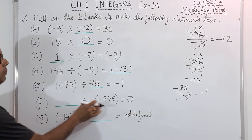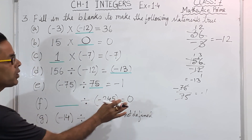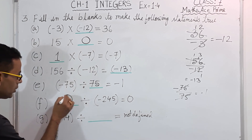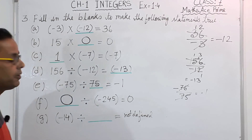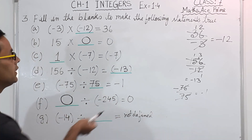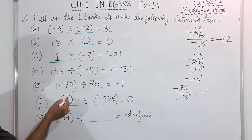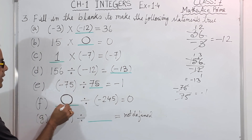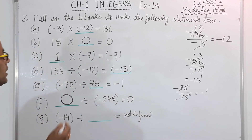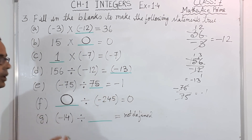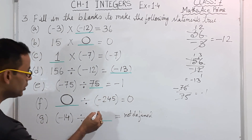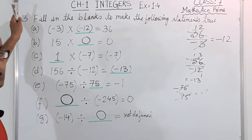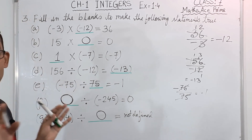Next one: what divided by minus 245 equals 0. This is the division property — 0 divided by any number gives 0 only. So the answer is 0. And when any number is divided by 0, it is not defined. I think question number 3, all parts A to G, you have understood. Now we will move on to question number 4.